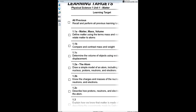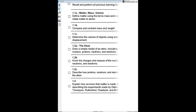Each target has a specific number: for example, 1.1A, 1.1B, 1.1C — all from Unit 1, Lesson 1. There are three targets for the first lesson: define matter using terms such as mass and volume, compare and contrast mass and weight, and determine the volume of objects. Scrolling down, 1.2 is Unit 1 Lesson 2, also with three targets for physical science.